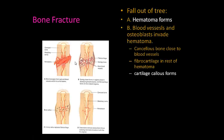Then you get what's called a cartilage callus. Blood supply gets into the area where the break is and starts to put down cartilage cells. At this point you still have a cast on, and the bone is not incredibly strong yet.